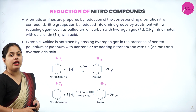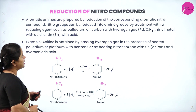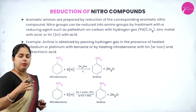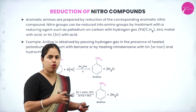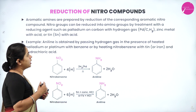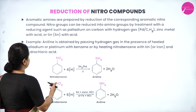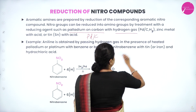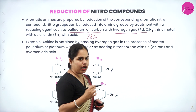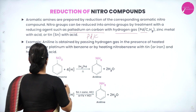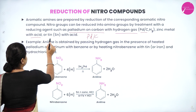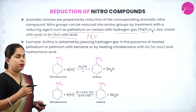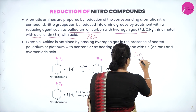Let us begin with the first method: reduction of nitro compounds. Aromatic amines are prepared by reduction of the corresponding aromatic nitro compound. Nitro compounds can be reduced to an amino group by treatment with a reducing agent such as palladium on carbon with hydrogen gas (Pd/C + H₂), zinc metal with acid, or tin with acid — where the acid can be HCl. Using these reagents, the NO₂ group is reduced to NH₂.